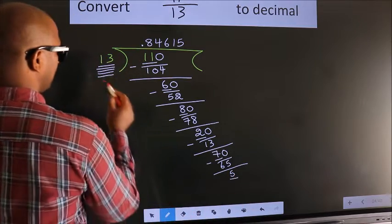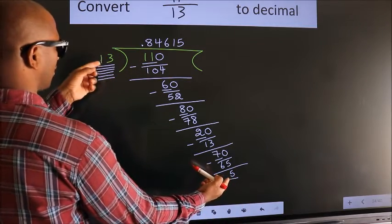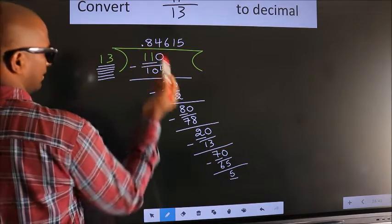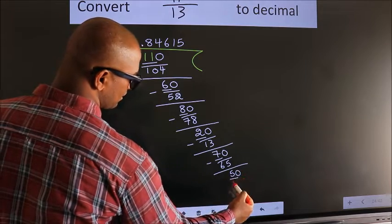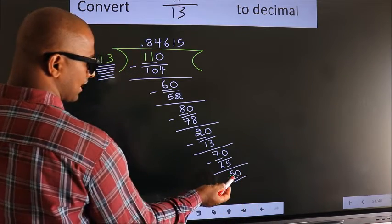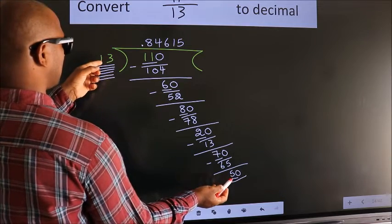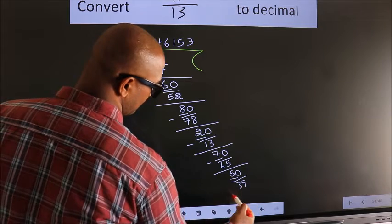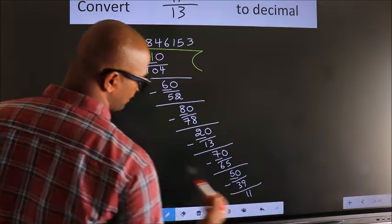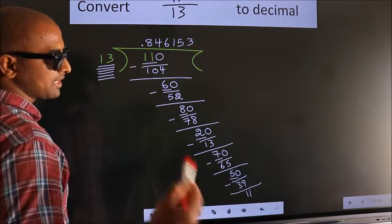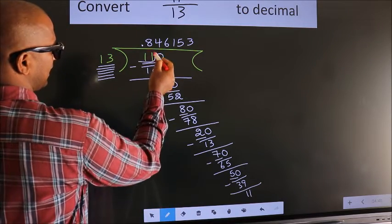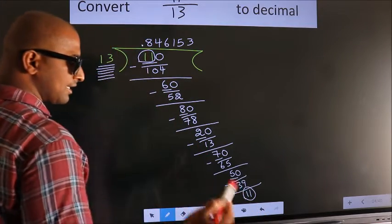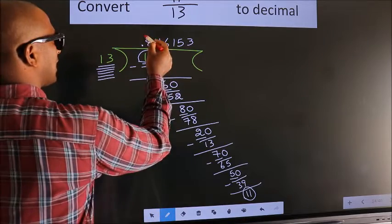Here we have 5 and here 13. 5 is smaller than 13, and we already have the decimal, so we can directly take 0 — so 50. Now we subtract and we get 11. Now you observe — here we had 11 and we got 11 again. That means we get a bar on these numbers.